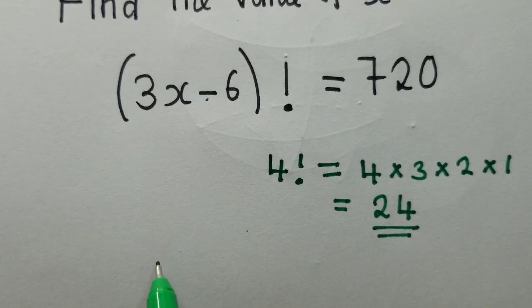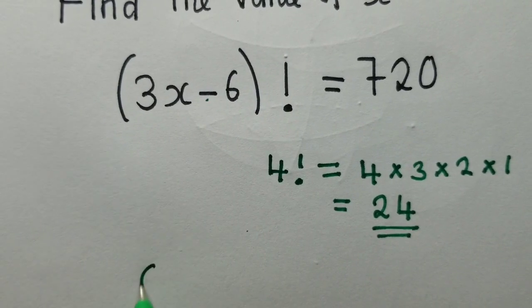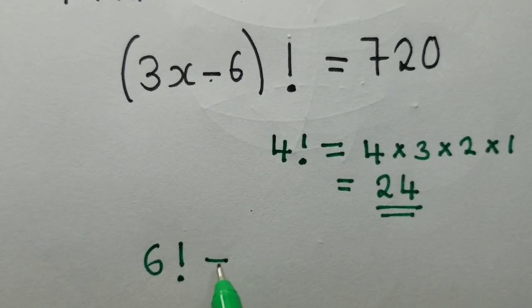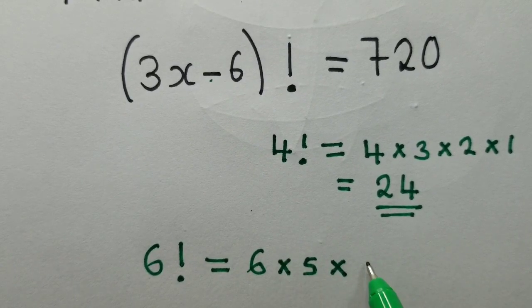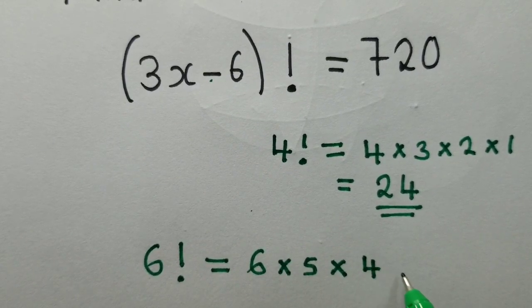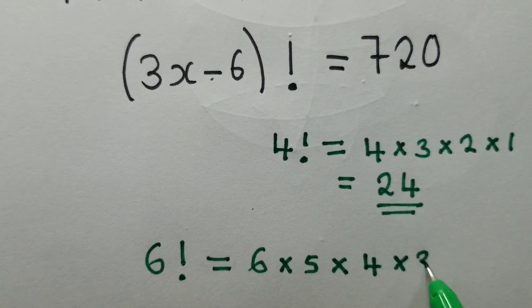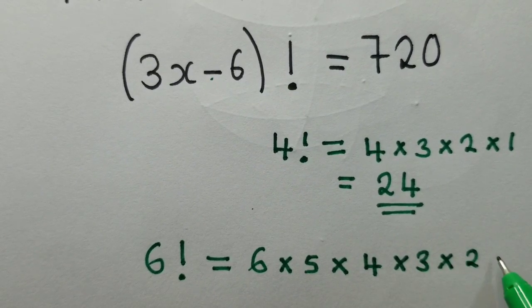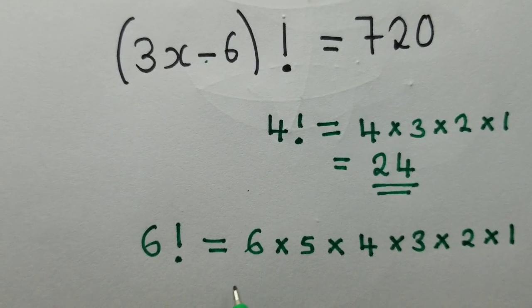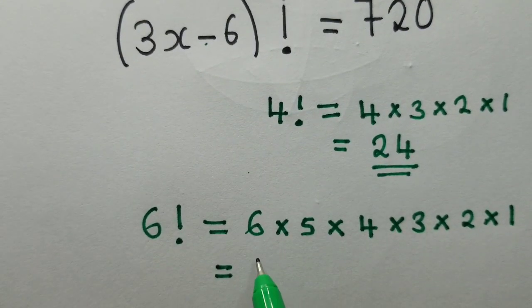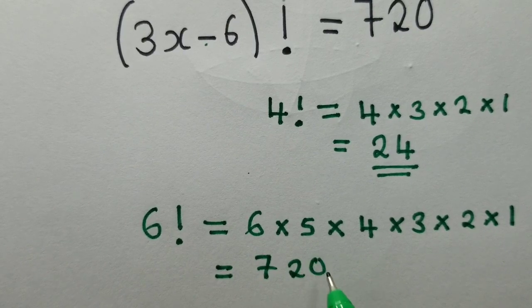So in this case, we're going to say 6 factorial. 6 factorial will just be equal to 6 times 5 times 4 times 3 times 2 times 1. So when we multiply all these numbers, we are simply getting 720.